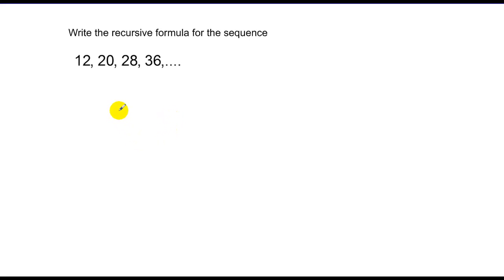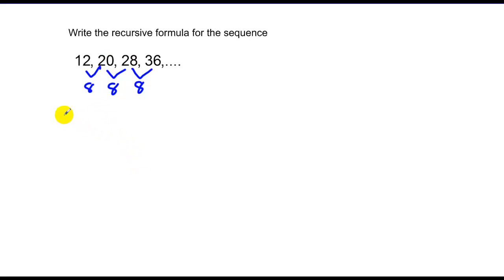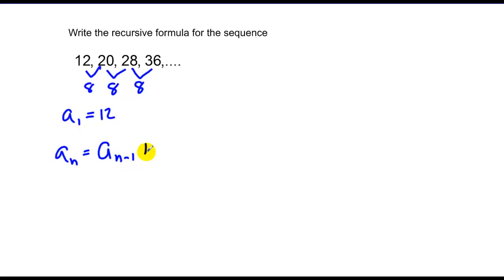Now we want to write a recursive formula for this sequence. I find it good to look between the terms and see what's happening. In this case, there's a difference of 8 between each term. This one's pretty straightforward. We know our first term equals 12, and then a sub n equals a sub n minus 1 plus 8.